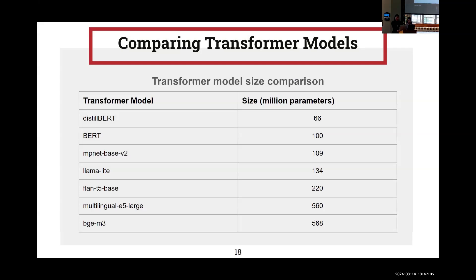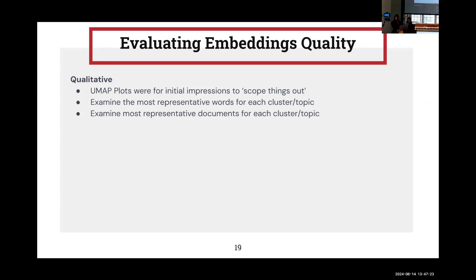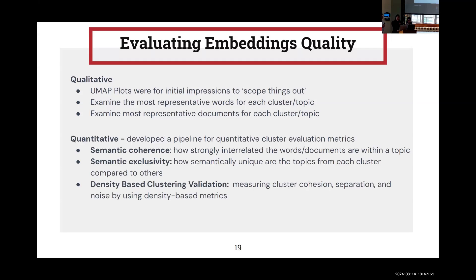Some of the models that we tried include BERT and DistilBERT, which are encoder-only transformer models that are only good for understanding text tasks. We also tried encoder-to-decoder transformer models, such as FLAN-T5, which can also generate new text. To compare these different embedding models, we looked at qualitative and quantitative metrics. Qualitatively, we used UMAP plots, which are visualizations that reduce and plot the embeddings in two dimensions and serve as an initial impression to scope out how the potential topic clusters are. Using these UMAP plots, we can look at the most representative words and documents for each cluster and topic.